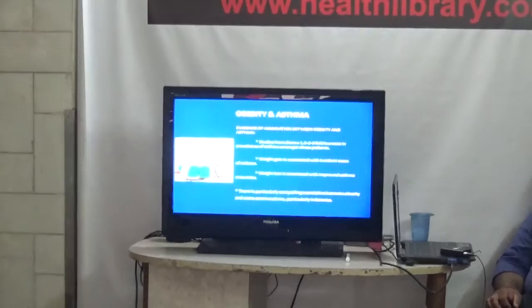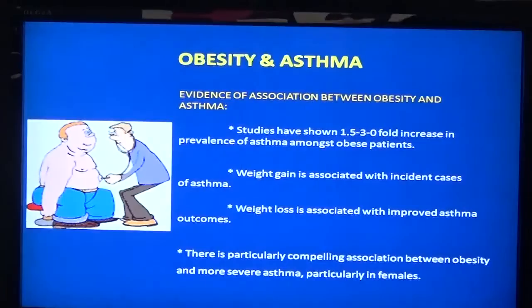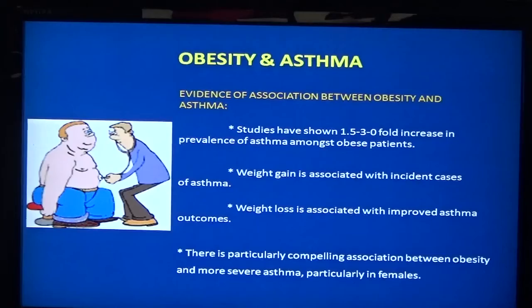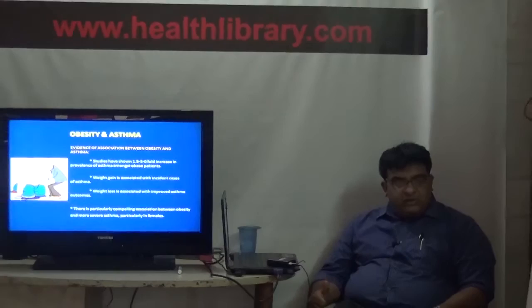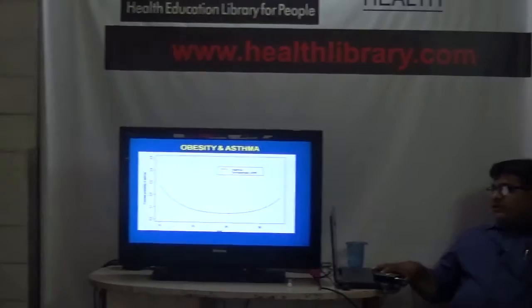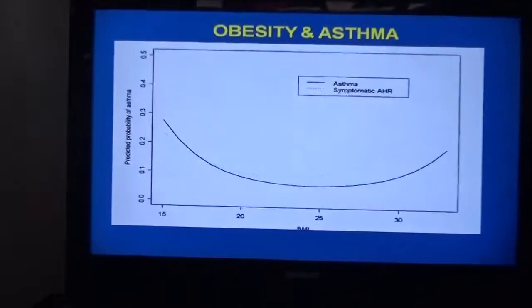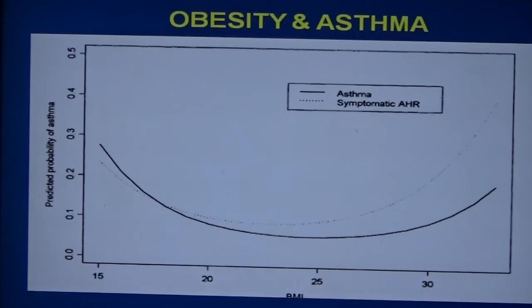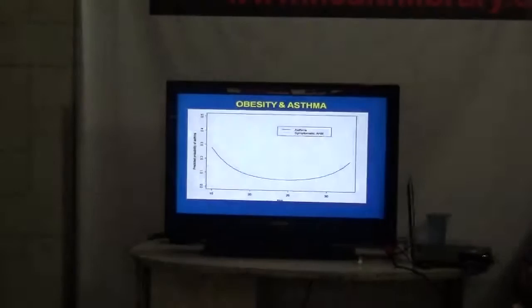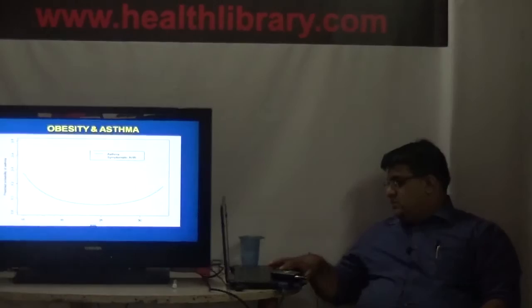Obesity and asthma are very closely linked. Obesity is associated with a chemical called adiponectin, which increases in obese patients and is an important triggering factor for asthma. If an obese patient presents with asthma symptoms, management must include weight loss alongside drugs for acute symptoms. Patients who maintain good health with a BMI between 20 and 25 have fewer symptoms of asthma and fewer risks of developing severe asthma.